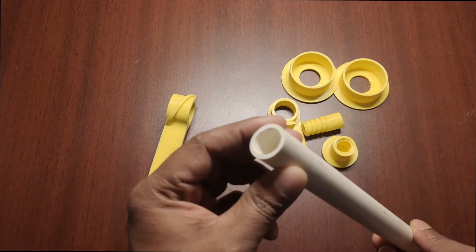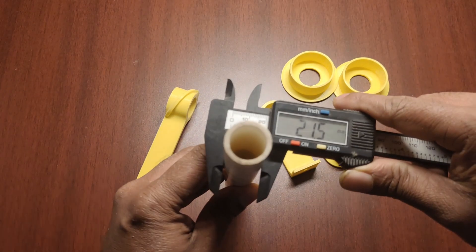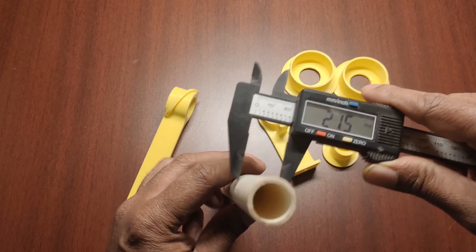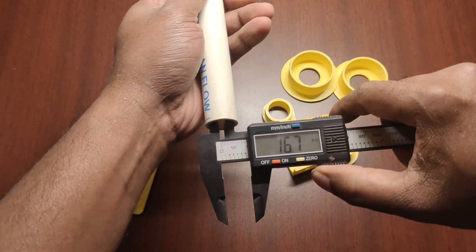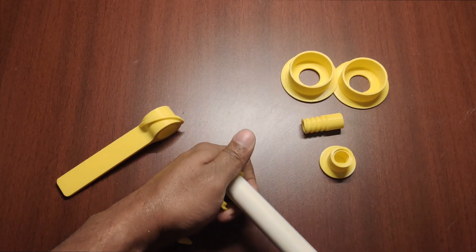Without wasting any time, let's move to the assembly process. Besides the printed parts, I am using a PVC pipe of outer diameter 21.5 mm, which is commonly used in domestic plumbing applications.